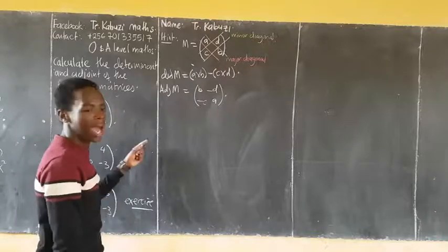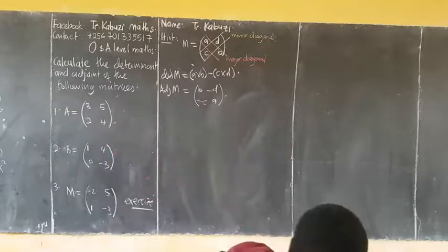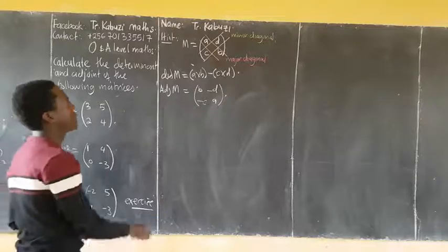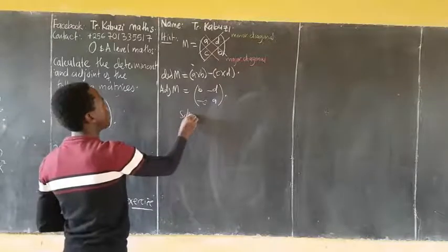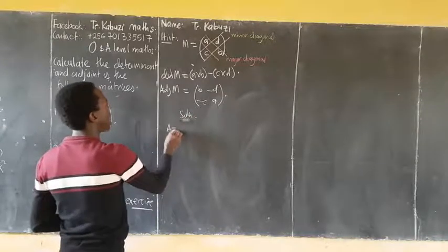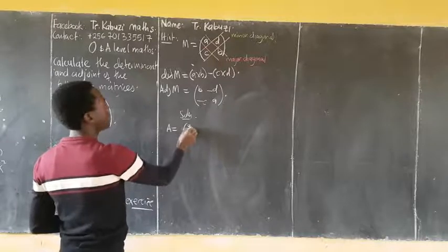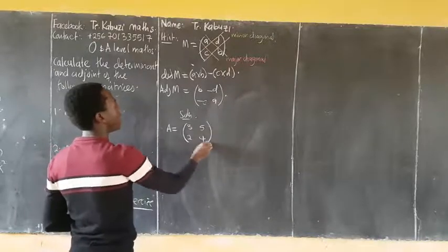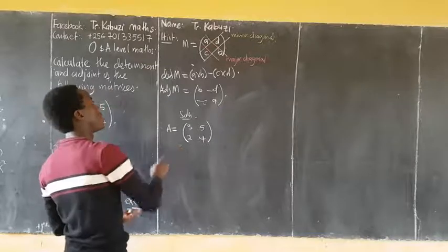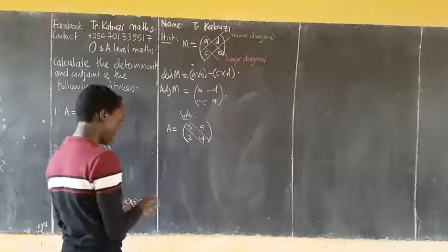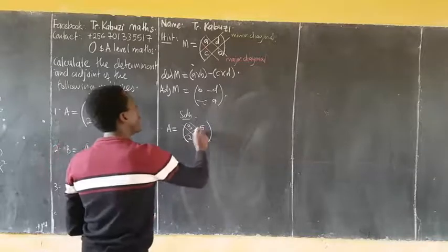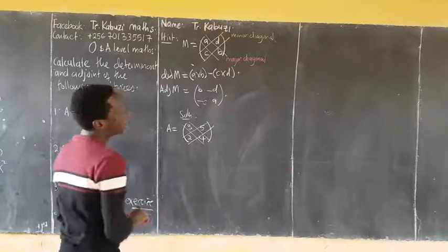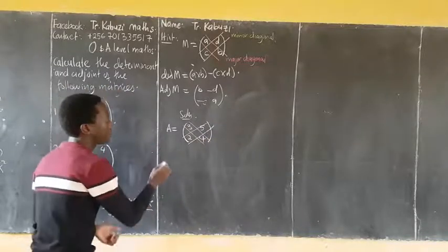Now if I'm going to handle this number one where I have that. So now for my A where I have 3, 4, 2, and 5. This one is called the major diagonal and this one is called the minor diagonal.